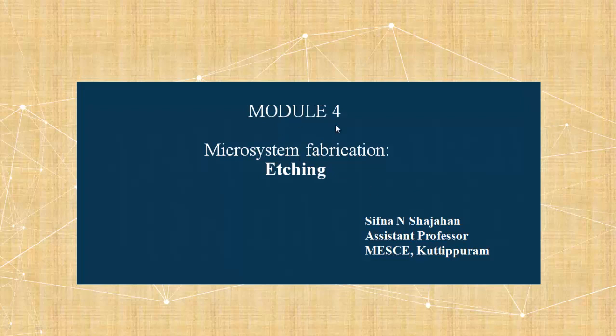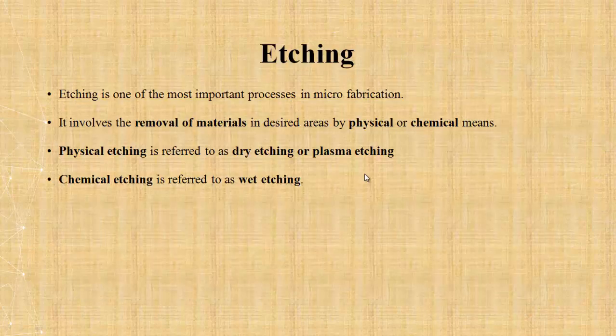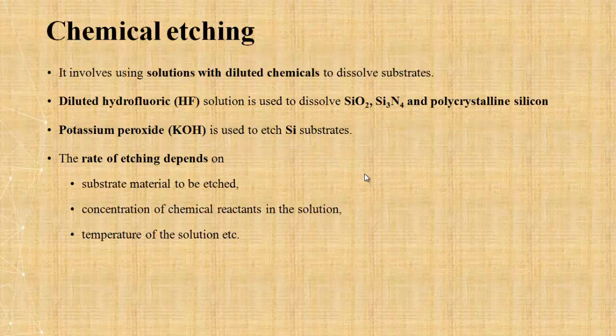Module 4: Microsystem Fabrication — the etching process, which is the last portion of this module. Etching means removal of material from a substrate. It can be either by chemical means or by physical means. Physical etching is also referred to as dry etching or plasma etching, whereas chemical etching by solution means wet etching or chemical etching.